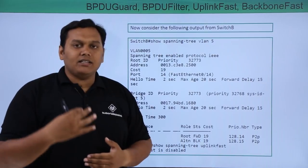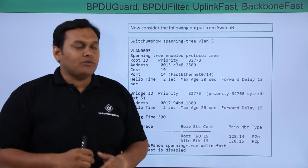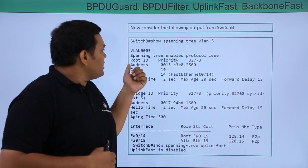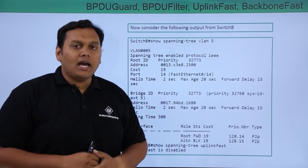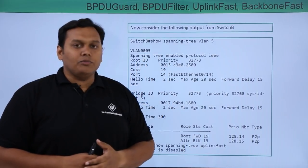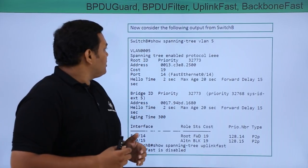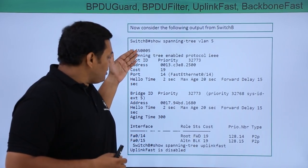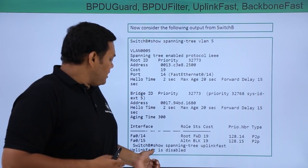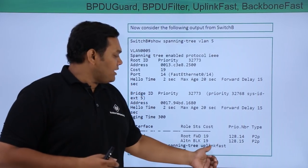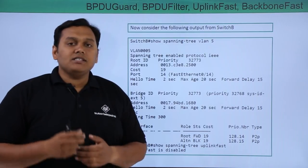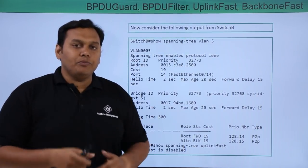You see VLAN 0005, spanning tree is enabled with protocol IEEE, and this is the root ID — meaning root bridge information for switch B. When you run 'show spanning tree uplink fast' on switch B, it will clearly show that uplink fast is disabled on switch B.